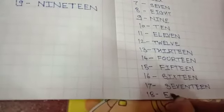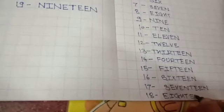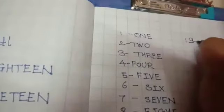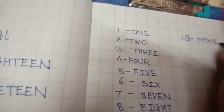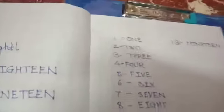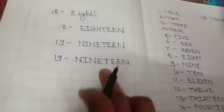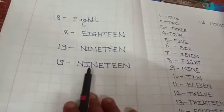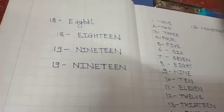E-I-G-H-T-T-E-E-N, eighteen. N-I-N-E-T-E-E-N, nineteen. What is the spelling of 19? N-I-N-E-T-E-E-N, nineteen.